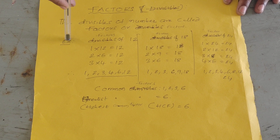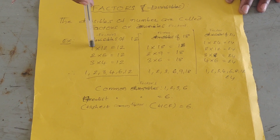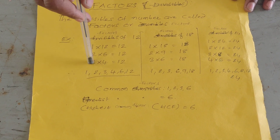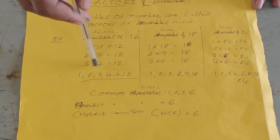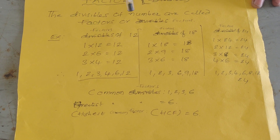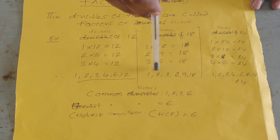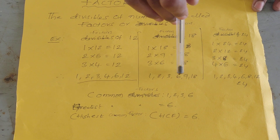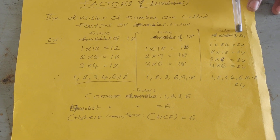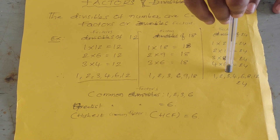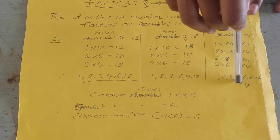Examples of factors: Factors of 12 are 1, 2, 3, 4, 6, and 12. Factors of 18 are 1, 2, 3, 6, 9, and 18. And factors of 24 are 1, 2, 3, 4, 6, 8, 12, and 24.